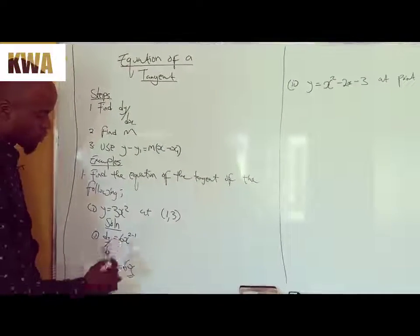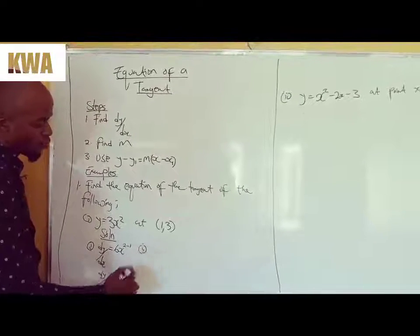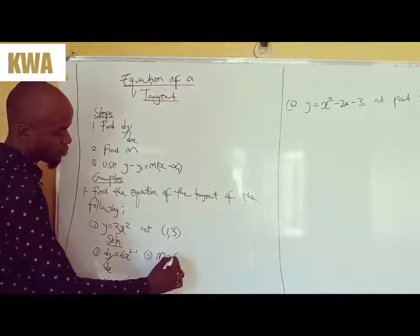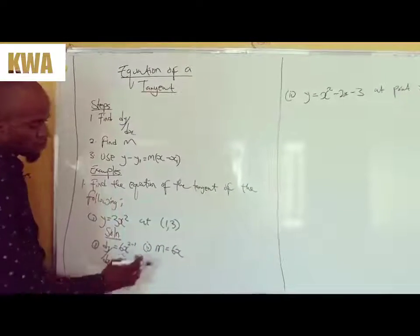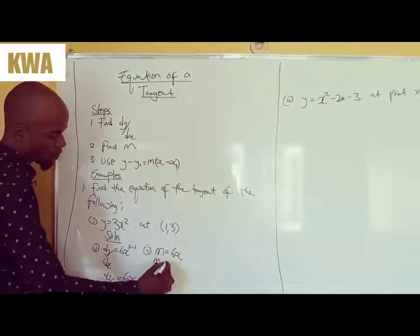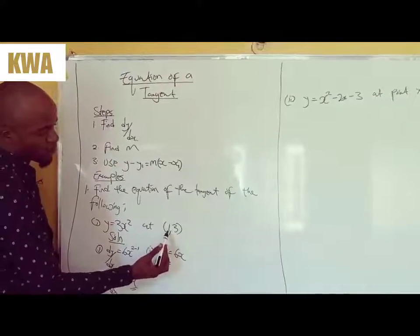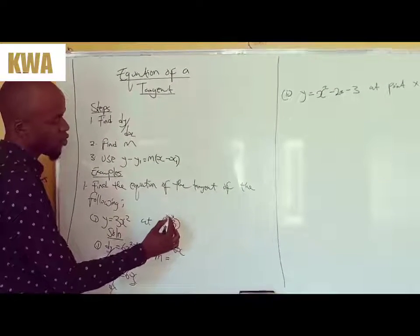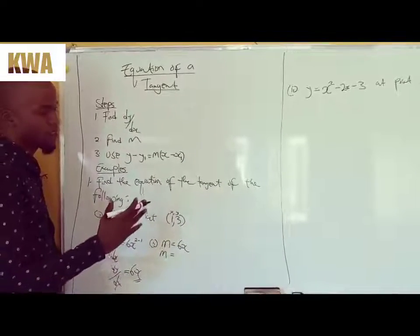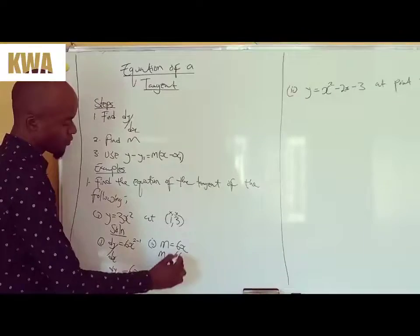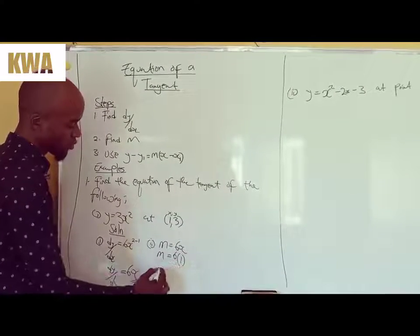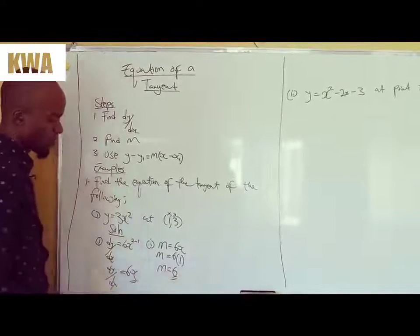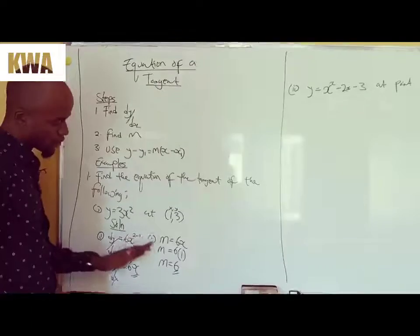The next thing now is to find your gradient. You use your derivative. You are just going to put m equals 6x. So I've just replaced the dy/dx with m. Have you seen these points they've given us, they've given us 1, 3. So this is x, this is y. Always, the first number is the x, second number is the y. So you have 6, then x is 1, you put 1. So m equals 6 times 1, 6. So that's your m. Found your first step, second step.